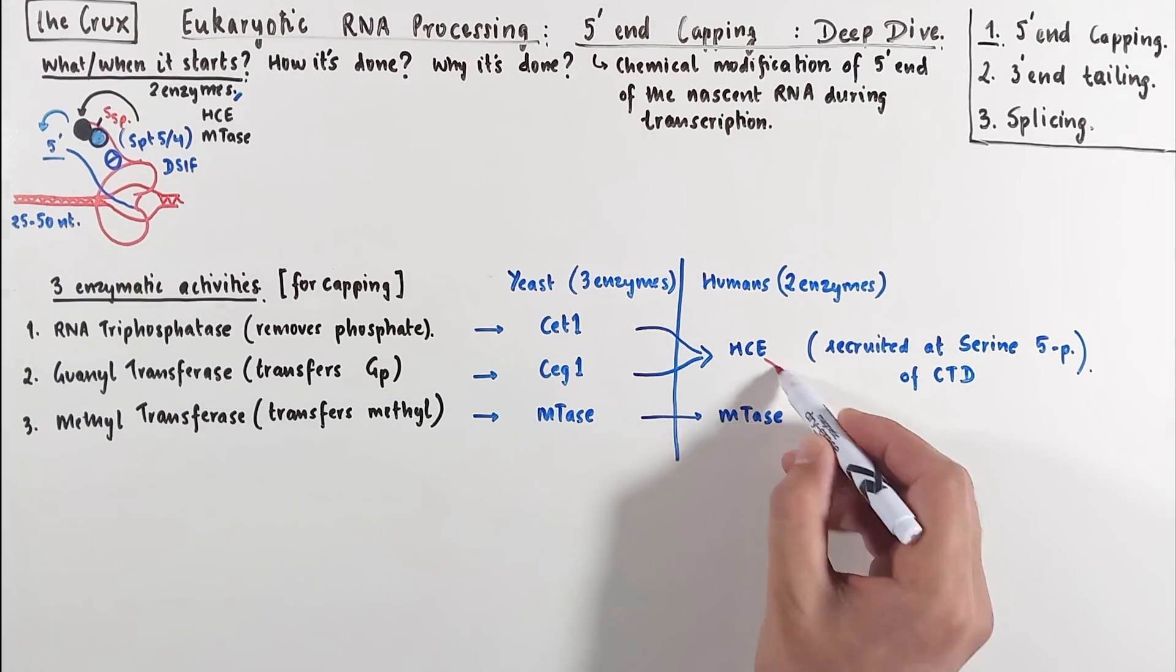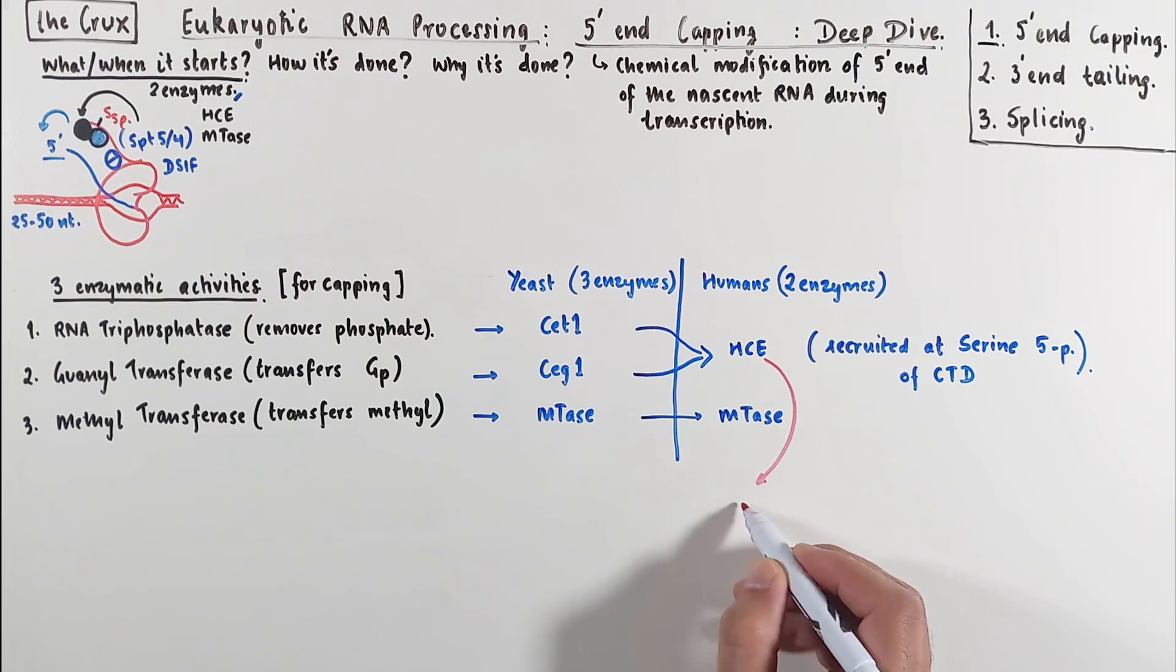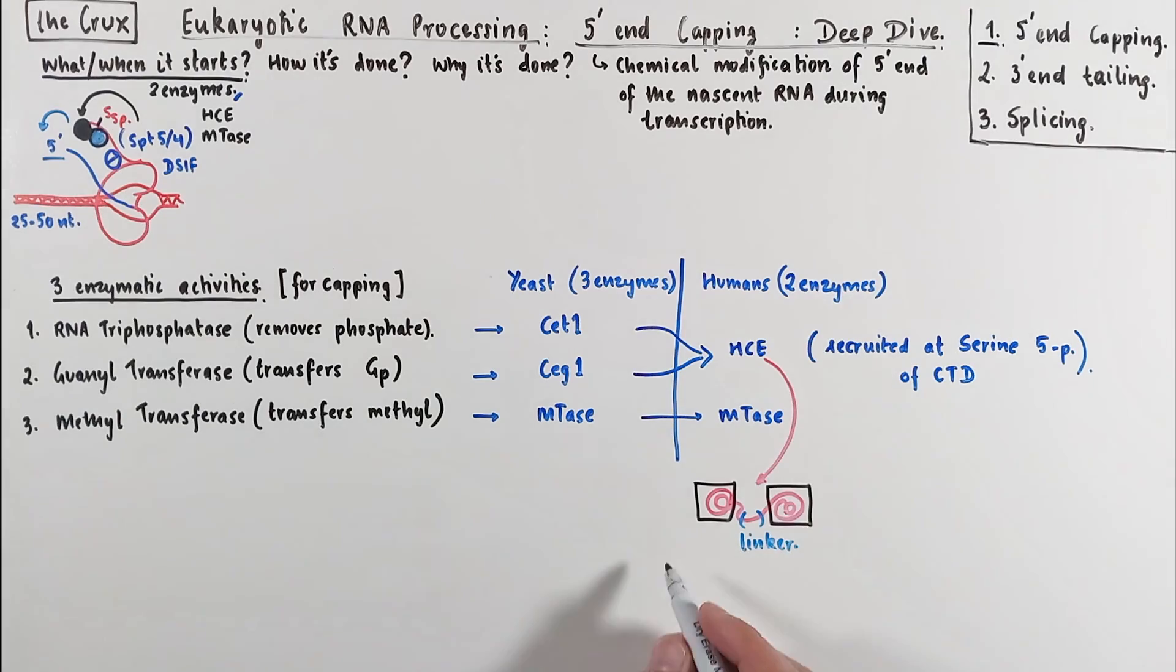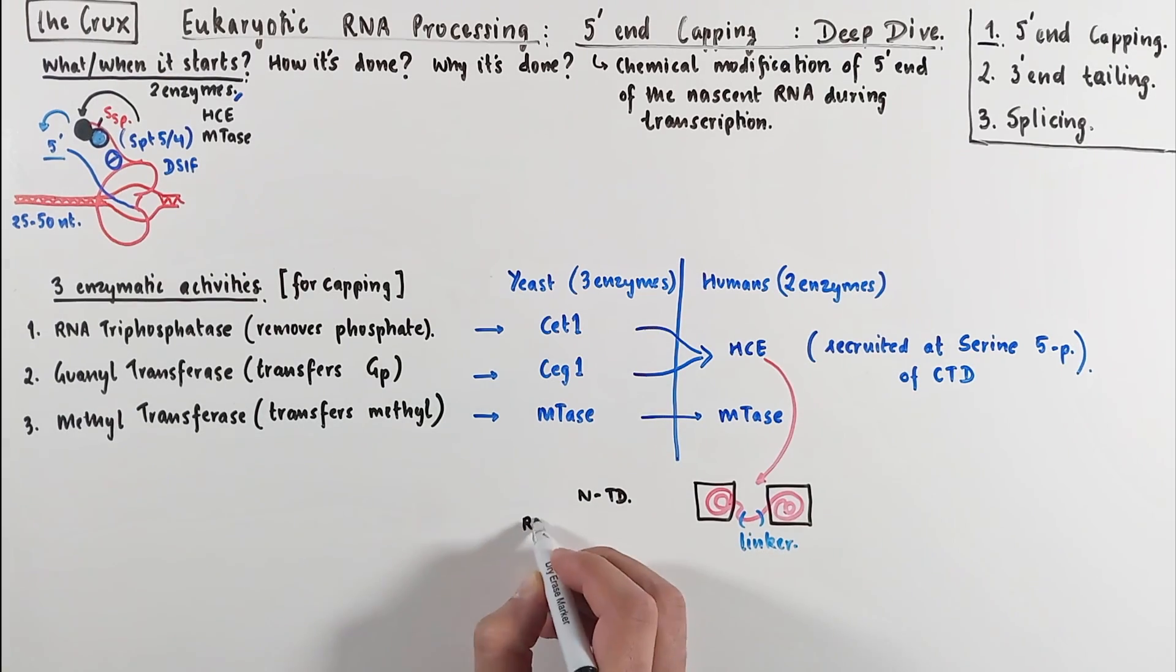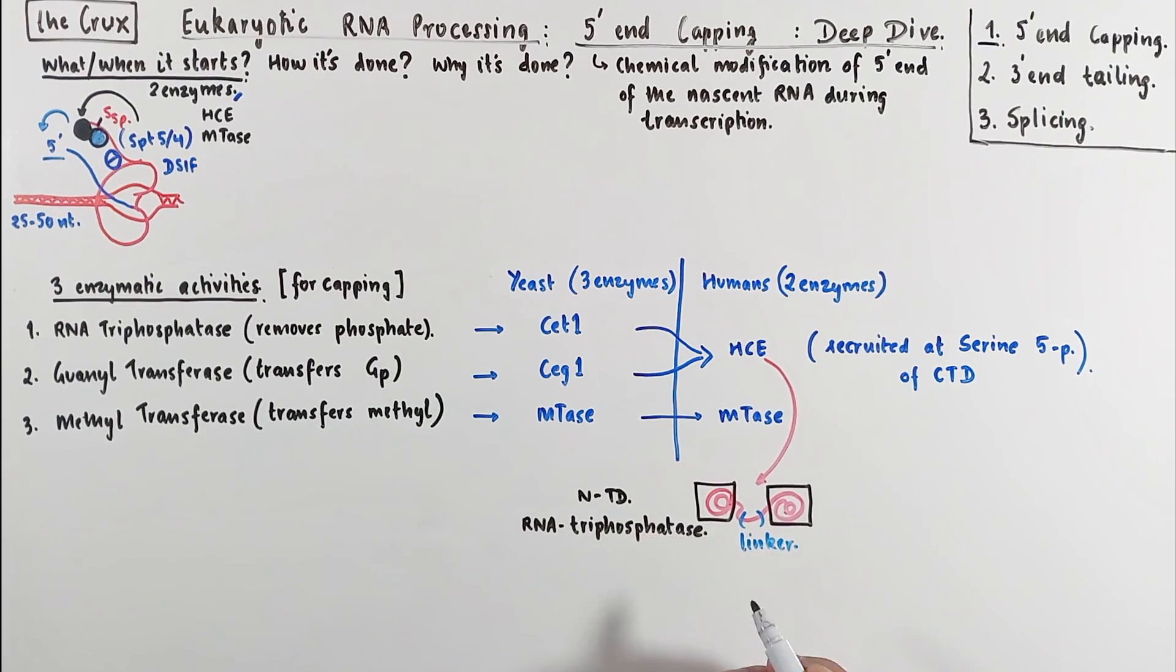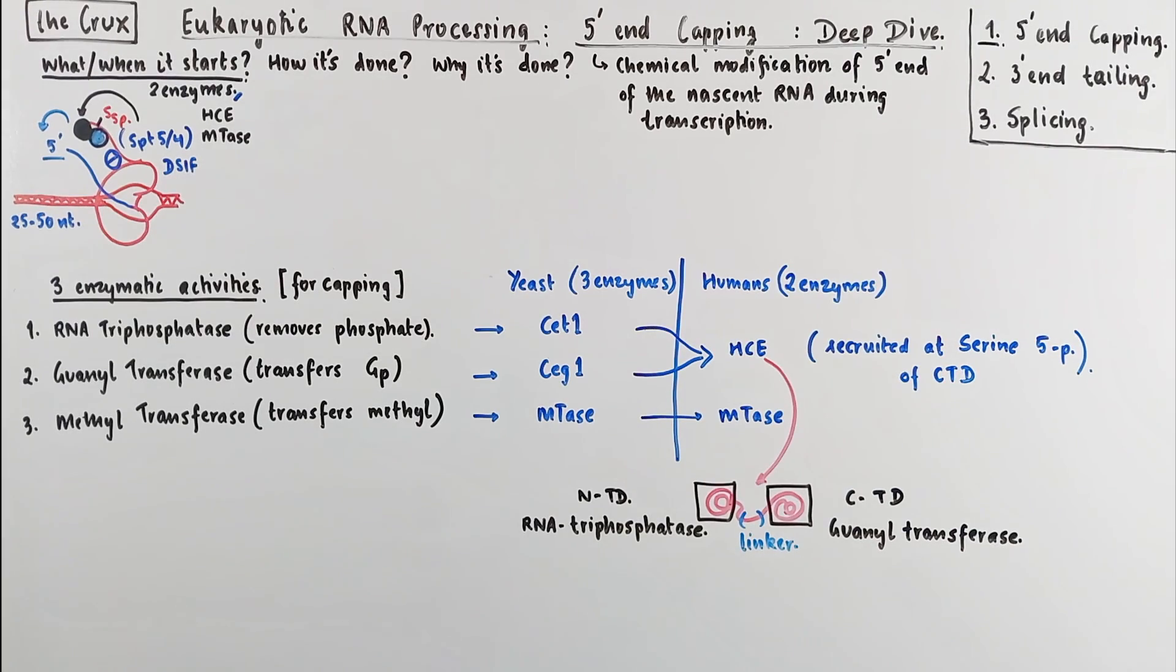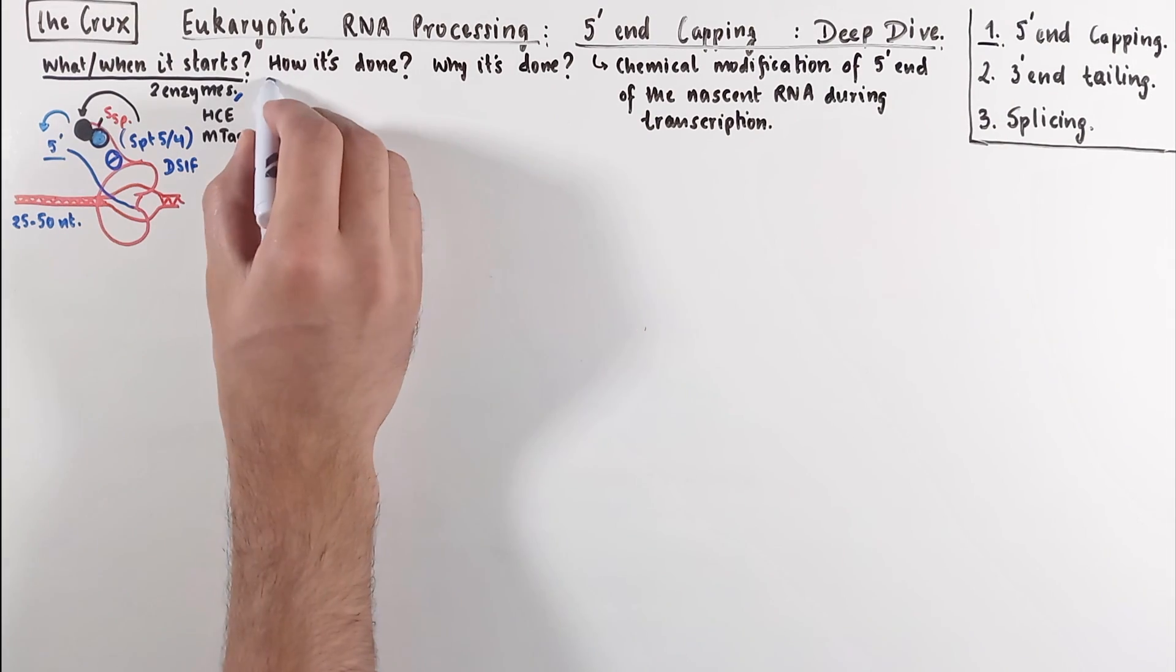Just a side detail on the human capping enzyme, the two activities in this enzyme are encoded in two domains, which are separated by a linker. The N-terminal domain has the RNA triphosphatase activity, and the C-terminal domain has the guanyltransferase activity.